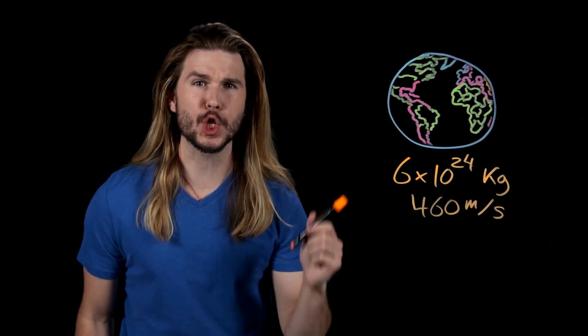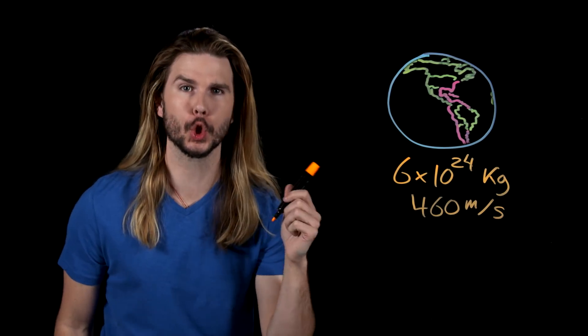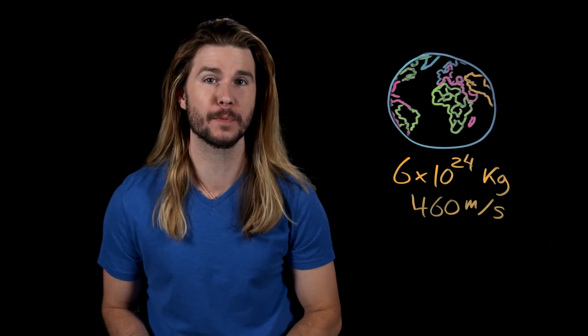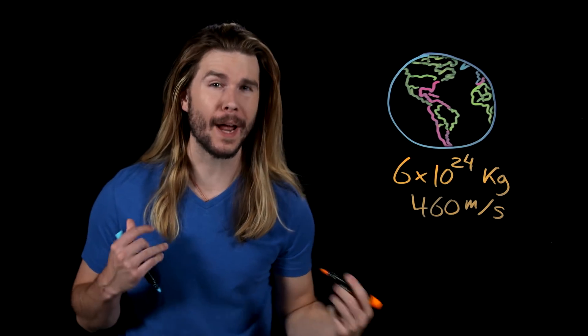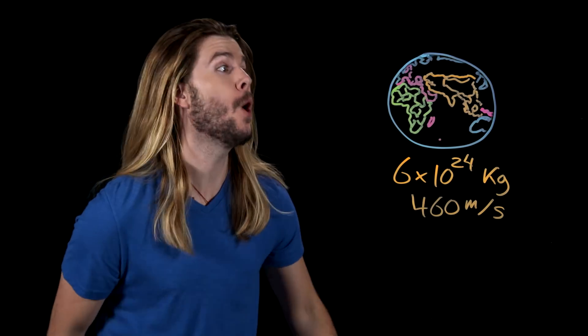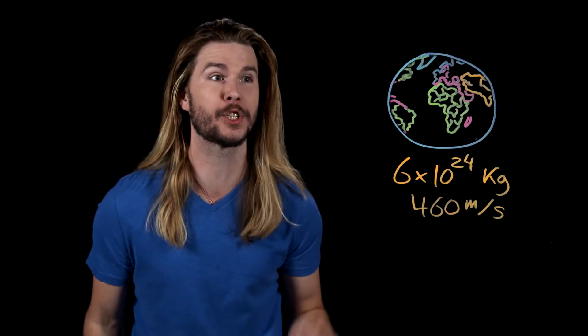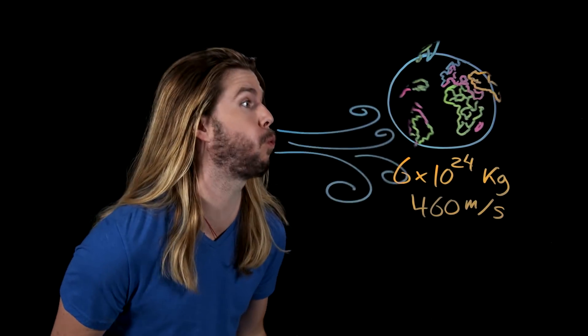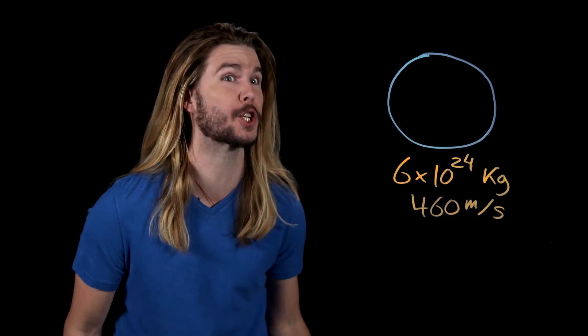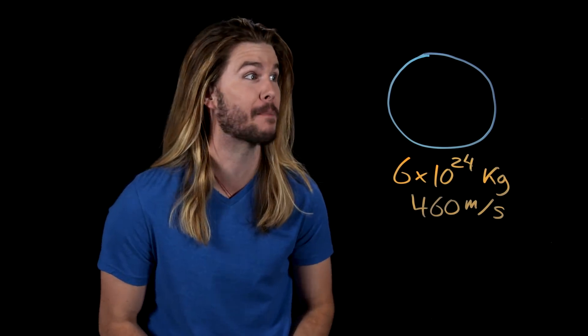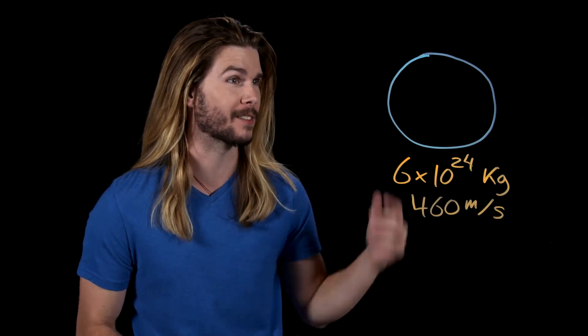The Earth weighs a trillion trillion kilograms and is spinning at around 460 meters per second — around a thousand miles per hour — so to slow it down, let alone stop it dead and then spin it back up the other direction, would take enough energy to also destroy it and separate it gravitationally. I'm sorry, Lois — and everyone else, I guess.